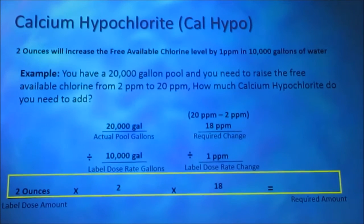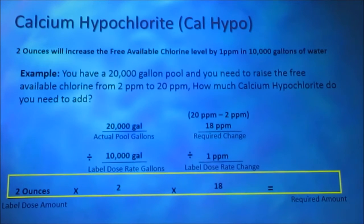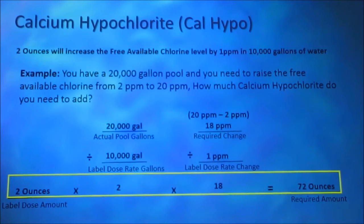Next we multiply from left to right: 2 ounces, our label dose amount, times 2, the amount of times we have 10,000 gallons of water, times 18, the amount of times we want to increase the free available chlorine level by 1 part per million. 2 times 2 times 18 equals 72 ounces.